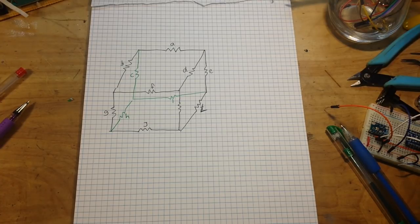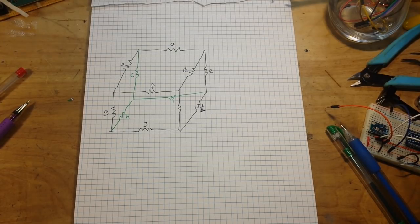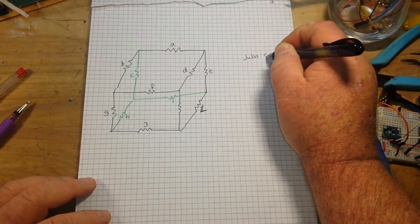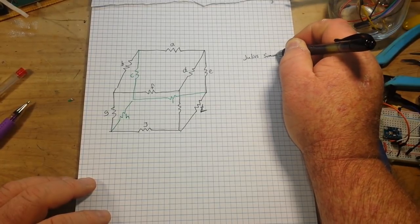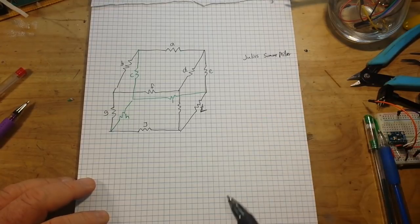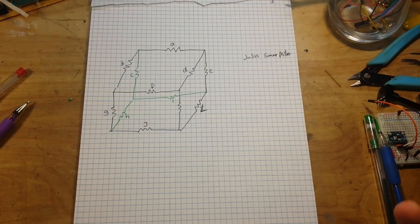And today's very special business is the problem of the resistor cube. We talked about it yesterday in the video about Professor Julius Sumner Miller. I'm going to put a link down below to a YouTube channel that has all his videos. I urge you to watch them. They're fantastic.